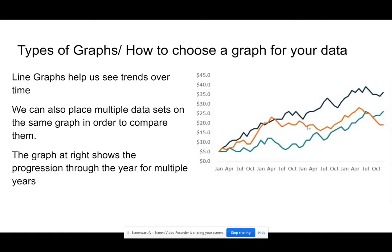Then we have line graphs. Line graphs are best used when we're looking at a trend over time — how something progresses compared to the time in which it took place. The benefit of a line graph is we can actually take multiple data sets and graph them on the same plane.